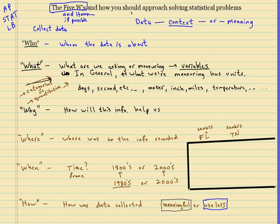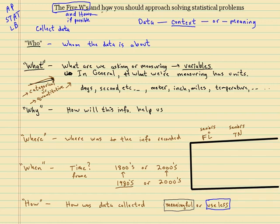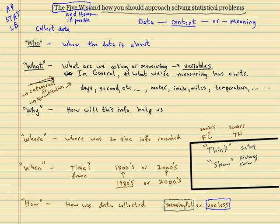So let's talk about something that's pretty important. That'll just kind of do off to the side. So this is the second part. How you should approach solving statistical problems. Anytime you get a problem. You have to start doing this. You have to think about what it's asking. This is kind of like your setup. Where you're thinking. The next thing you have to do is show. So this is when you show pictures. Show work. Show work.